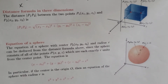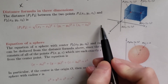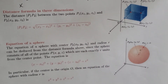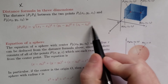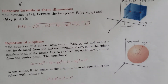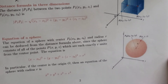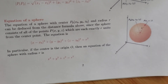This formula extends into four dimensions, five dimensions, etc. You would just add a fourth variable — for example, w1 minus w2, quantity squared — under the square root as well. We also have our formal definition for the equation of a sphere.